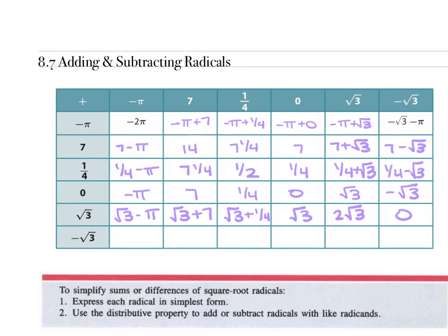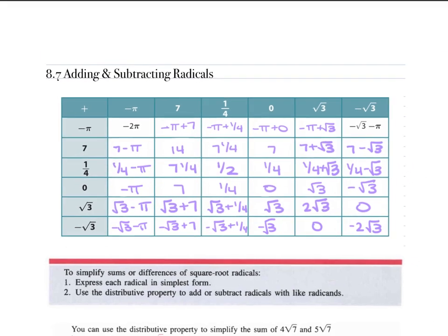For the negative square root of 3: negative square root of 3 minus pi. Negative square root of 3 plus 7. Negative square root of 3 plus one-fourth. Negative square root of 3. 0. And negative 2 square root of 3. So we're treating these radicals just like they were variables — if the radical is the same, we're just combining the terms in front of that radical.